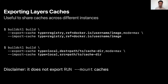BuildKit also supports exporting layer caches. It's pretty useful when you have different BuildKit instances running on different hosts and you want to share caches across them. Note that it only exports layer caches — it doesn't export mount caches. Also, depending on the size of your cache and your Docker registry, it might be slow to export and import caches, so you'll have to decide whether it has a good or bad impact on your build.